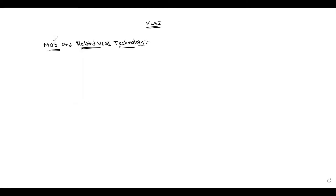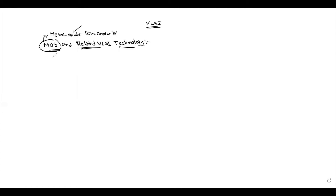Introduction to VLSI technology. MOS stands for Metal Oxide Semiconductor. NMOS and EMOS play a very important role in VLSI technology. MOS technology is very important, and the E-ranking is important in the stick diagrams.